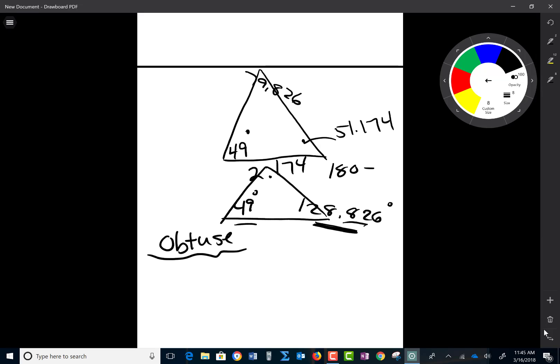So if I'm trying to find the rest of the sides, I have to actually use the 128 degree angle with my 32, or the 49 with the 31, and the 2.174 to find the missing side.